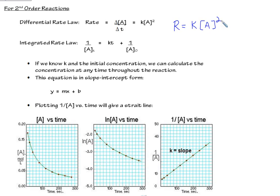Now let's look at it focusing more on time. Here's the integrated rate law for a second-order reaction. I like this setup because it's in slope-intercept form — Y equals MX plus B. A second-order reaction should produce a straight line when you graph 1 over concentration versus time.